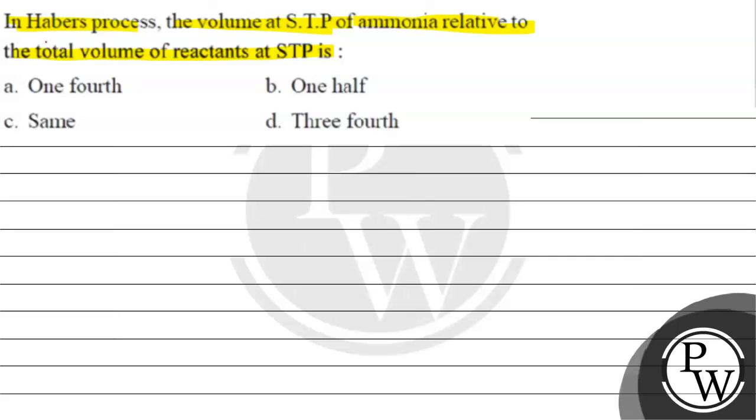Option A, one-fourth; option B, one-half; option C, same; option D, three-fourth. Right? The key concept for this question is Haber's process.